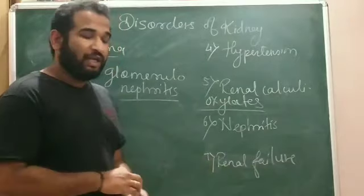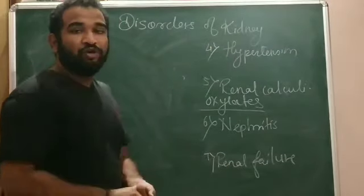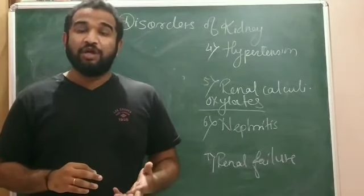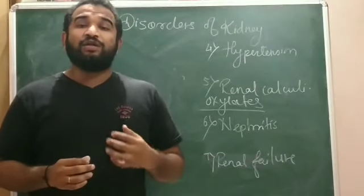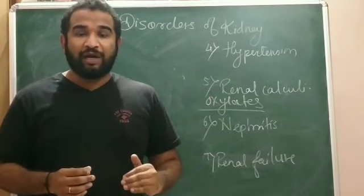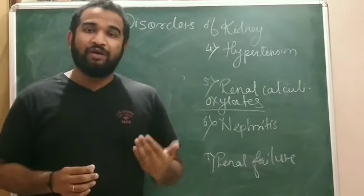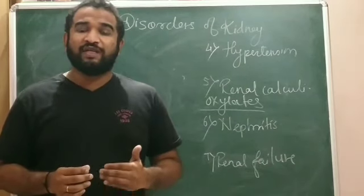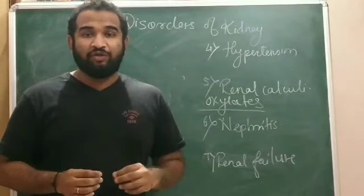The last disorder is renal failure. In renal failure, the kidneys stop the process of urine formation. In oliguria, only 250 ml of urine is excreted throughout the day, and in anuria, only 50 ml of urine is excreted throughout the day. These conditions occur in renal failure.